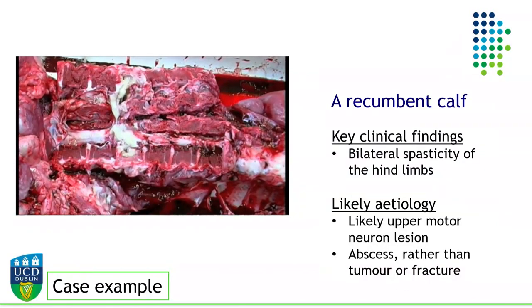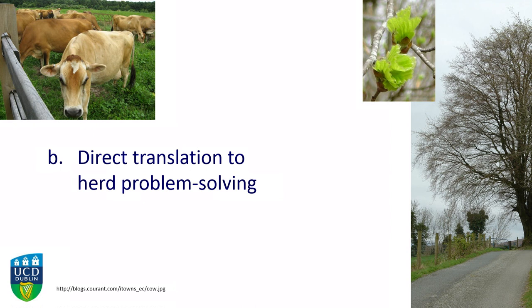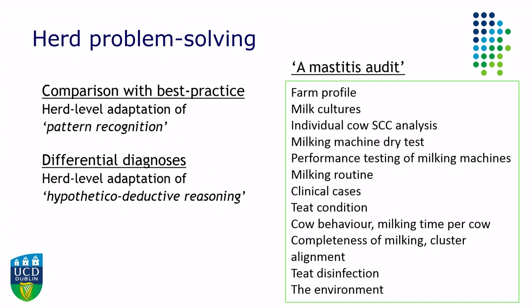That really just shows why we find this particular approach particularly useful. But what I'd like to do now is shift from the individual through to the herd. Our experience within the university is that for students, and also for practitioners, there's a direct translation of these approaches from the individual to the herd. The two key approaches commonly seen are firstly, like pattern recognition, comparison with best practice.